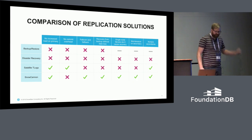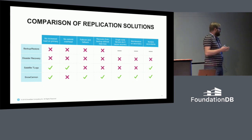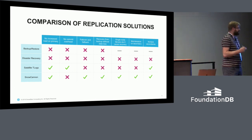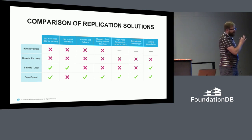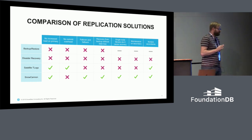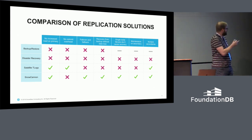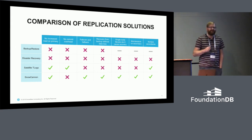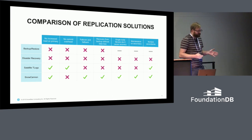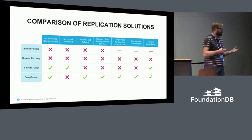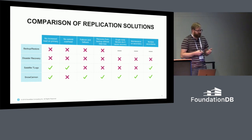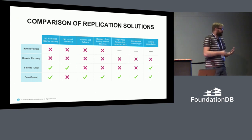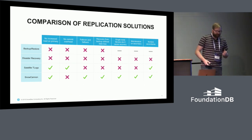This is the comparison of all available solutions. Snow Cannon — the thing we built — isn't yet open sourced, but we're in the process of doing that, so you will hopefully be able to deploy it as well. Keep in mind this comparison is highly skewed to our requirements. Basically what Snow Cannon gives us — with the main drawback of slightly increased commit latency depending on how you deploy it — is that it doesn't increase load on the primary. We can recover a backup, replay Snow Cannon logs, and get back a new cluster without any data loss. We can switch over and back.